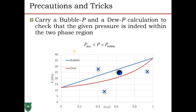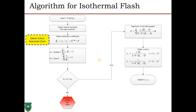Before solving the Rachford-Rice equation, always carry out a bubble point and dew point pressure calculation as a precaution. The given pressure must fall within the dew pressure and bubble pressure. In a P-x-y diagram, points outside the two-phase region are single-phase states, while the two-phase region is where flash into vapor and liquid streams is possible. So first verify that the total system pressure is bracketed between P_dew and P_bubble.